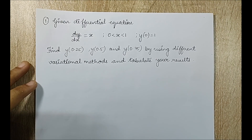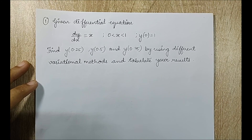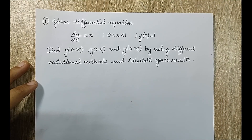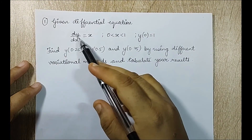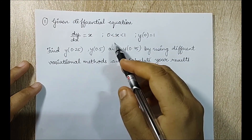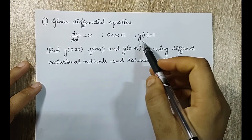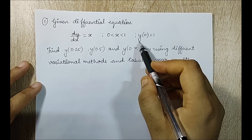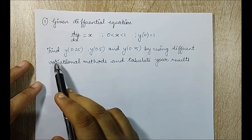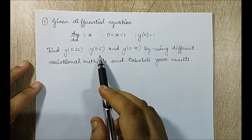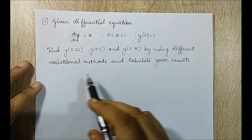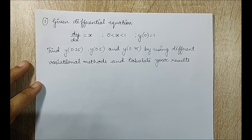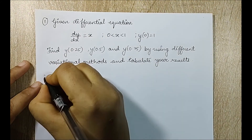Hello everyone, welcome to the next session of finite element analysis. In this session I am going to start with solving numericals on the weighted residue approach. The given differential equation is dy/dx = x, the domain is from 0 to 1, and the boundary condition given is y(0) = 1. Find y at 0.25, y at 0.5, and y at 0.75 by using different variational methods and tabulate your results.